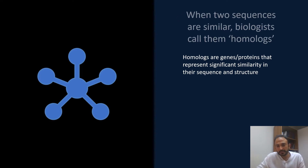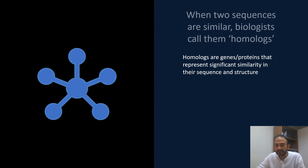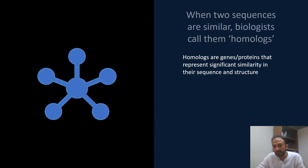One of the most commonly used terminologies is called homologs. Homologs are genes or proteins that represent significant similarity in their sequence and structure. The most generalized definition is that genes or sequences which are derived from a common ancestor — and we determine this by knowing that the sequences of both genes have some or a lot of similarities.